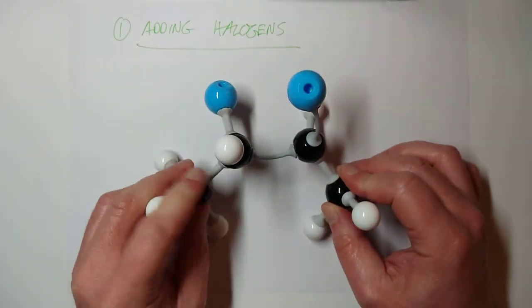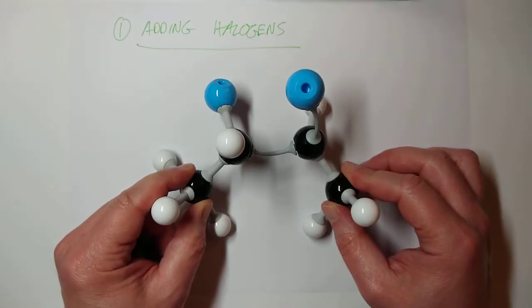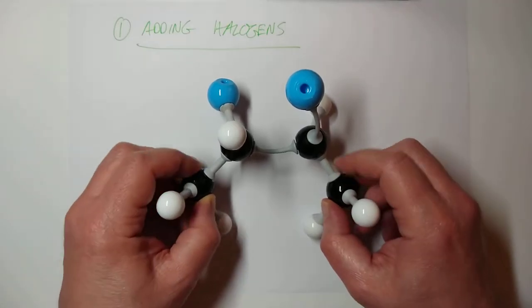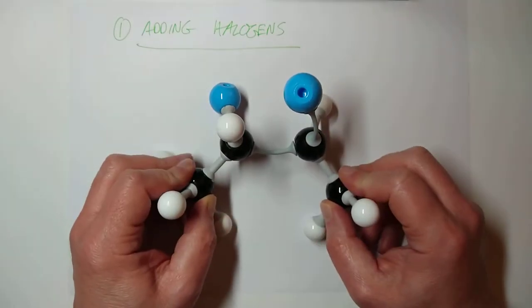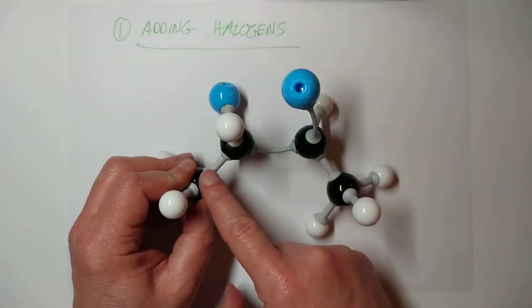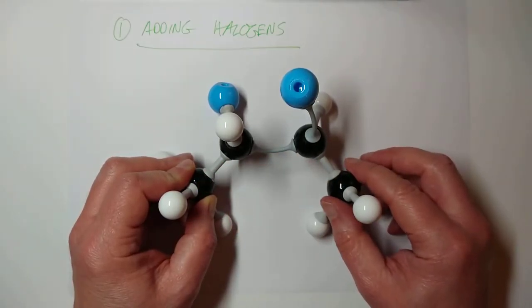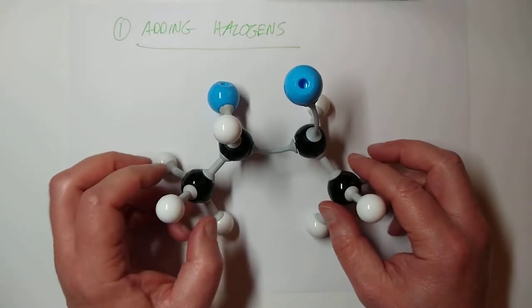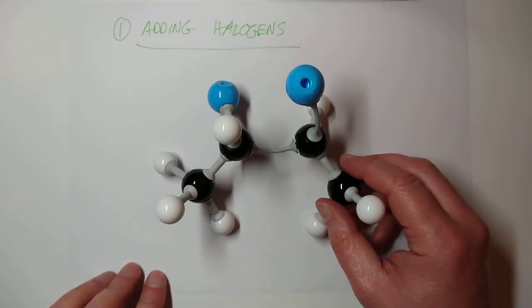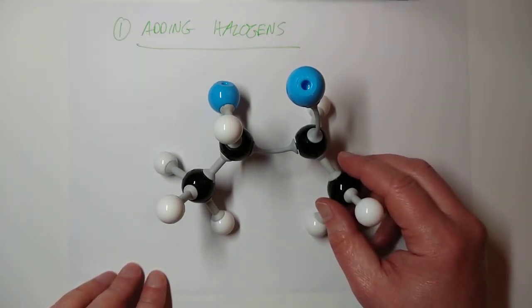Now, the SQA require you to know that this is called a dihaloalkane. Let's analyse that word. Di means two. We have two halogens added to the molecule. It is now converted to an alkane, of course, because they're all single bonds between the carbons.